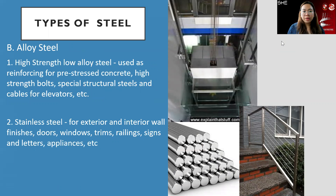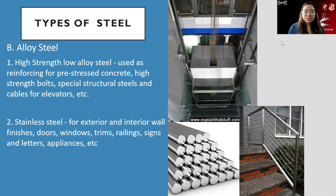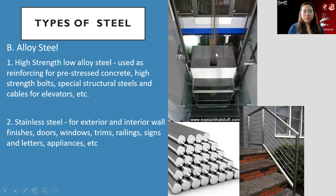Another type of steel is alloy steel. There are two kinds: high strength low alloy steel, used as reinforcing for pre-stressed concrete, high strength bolts, and most commonly for cables in elevators.